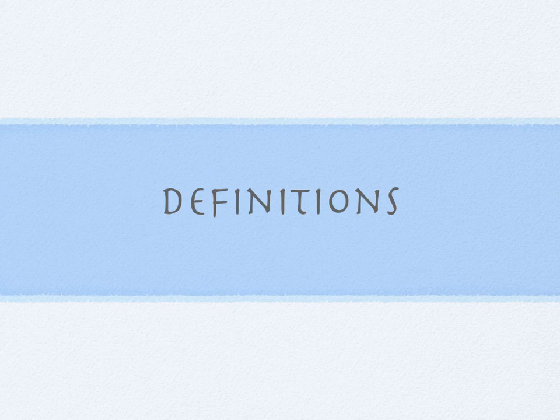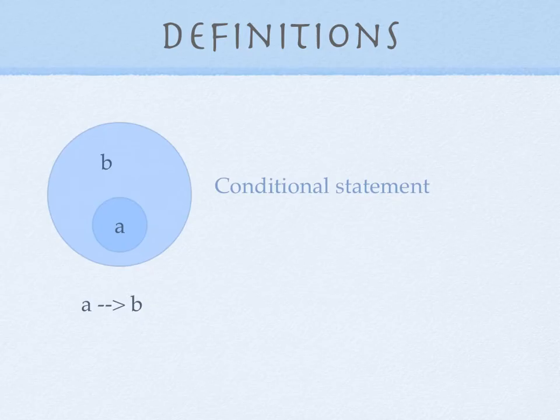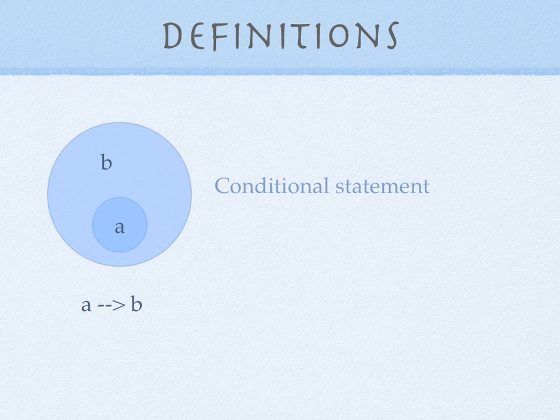Let's talk about definitions in geometry. Now let's review what a conditional statement means. And if we have a conditional statement, A implies B,